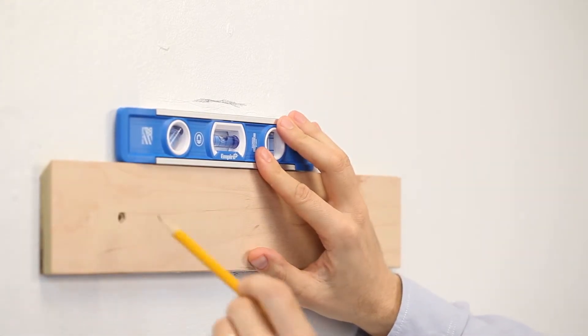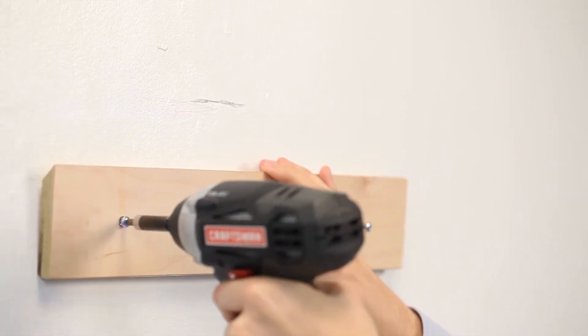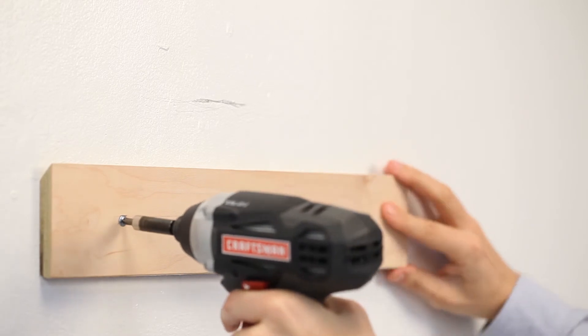For fast mounting, two pre-drilled holes are on the wood z-bar. Mark the wall through the holes. Place the wood z-bar over the drilled holes. Insert screws and tighten to fix onto the wall.